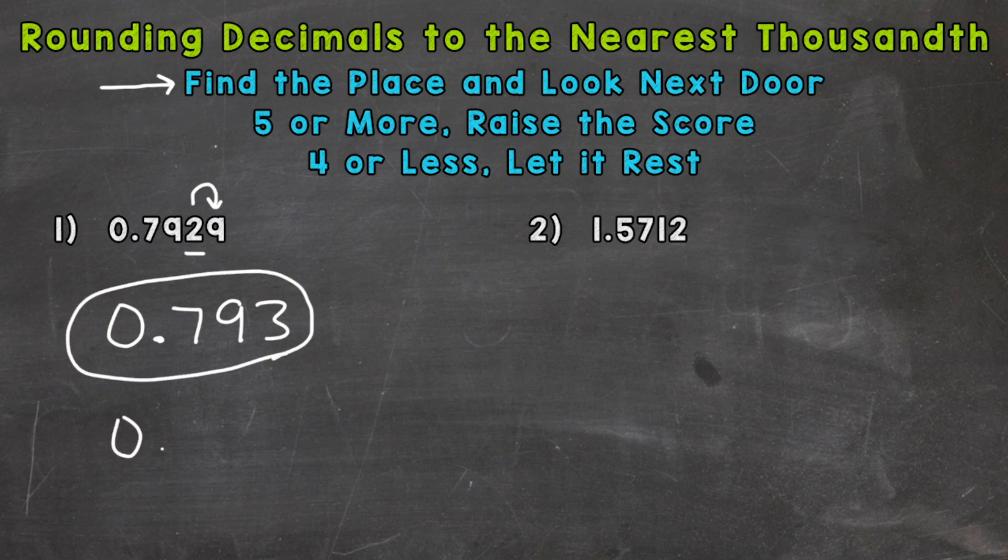When we round whole numbers we're used to changing all digits to the right of a rounded place to zeros. For decimals you can cut off at the rounded place because that zero is just a placeholder. It doesn't change the value of that decimal. So any decimal with zeros to the right, those zeros are just placeholders. Again it doesn't change the value of that decimal.